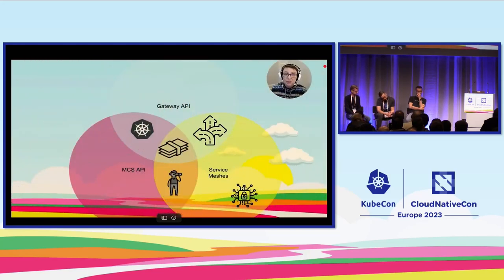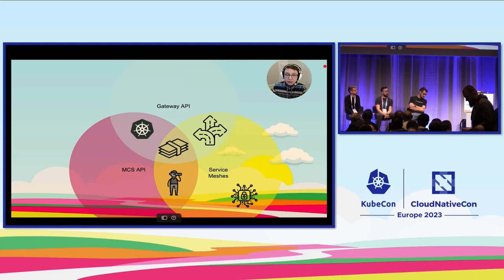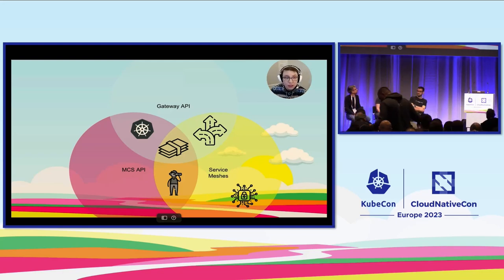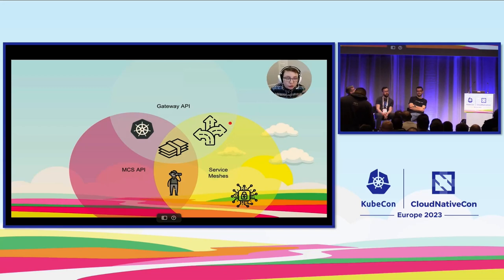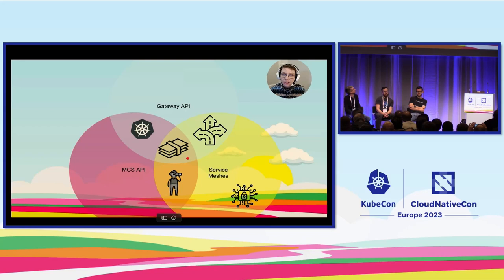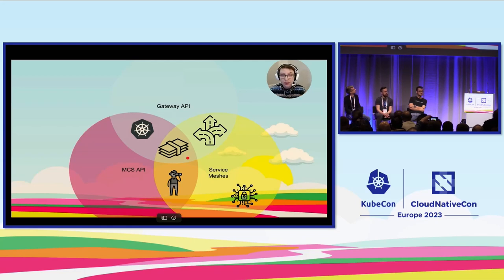What we want to talk about today is these three general projects — MCS API, Gateway API, and Service Meshes — and where they overlap and how they are coming together. We've been thinking a lot about these overlapping joints in the Venn diagram. All of these projects bundle some backends together — some higher level of abstraction, like a service, to bundle some endpoints together.